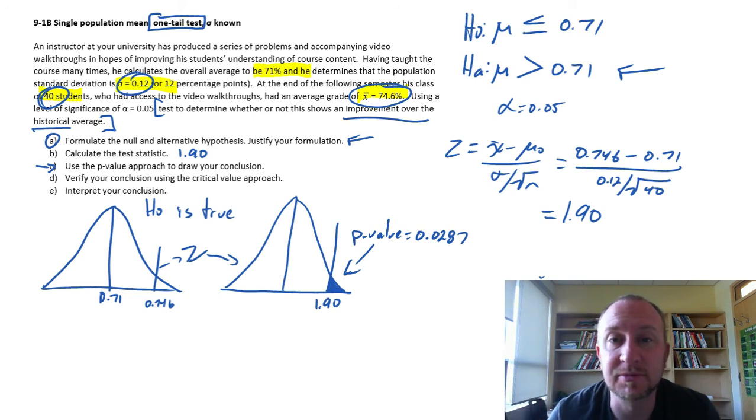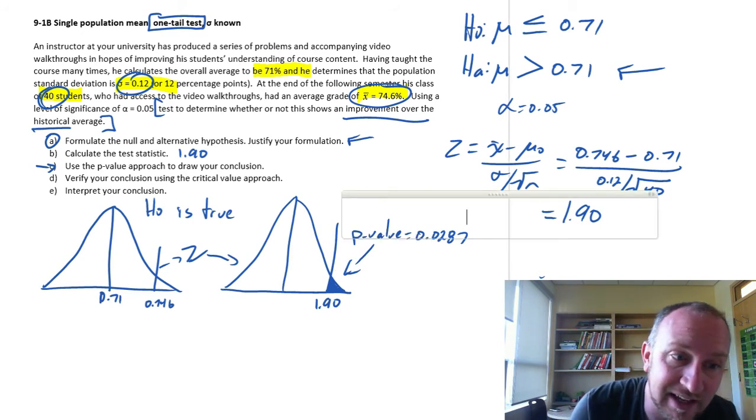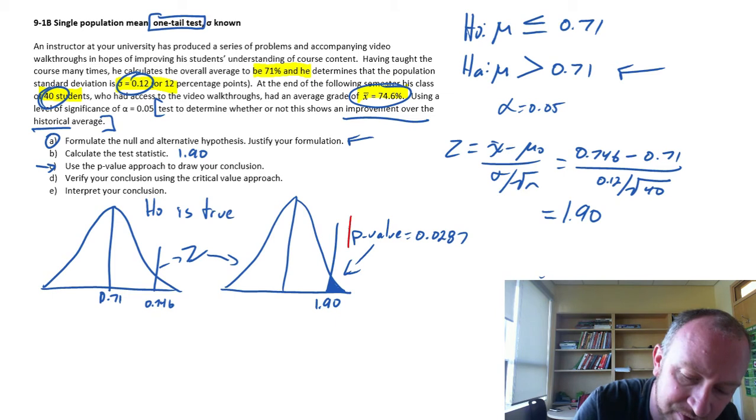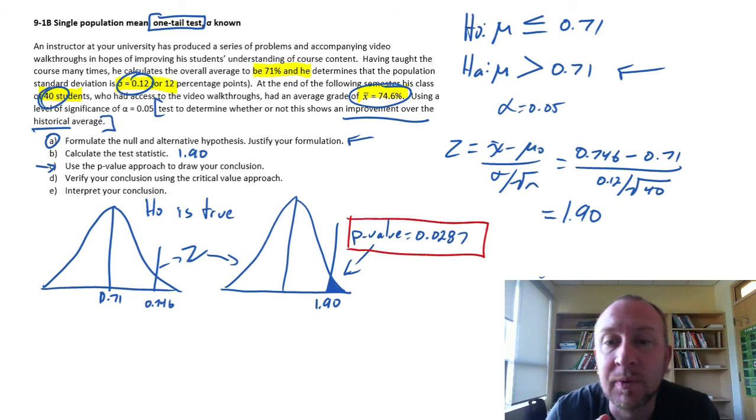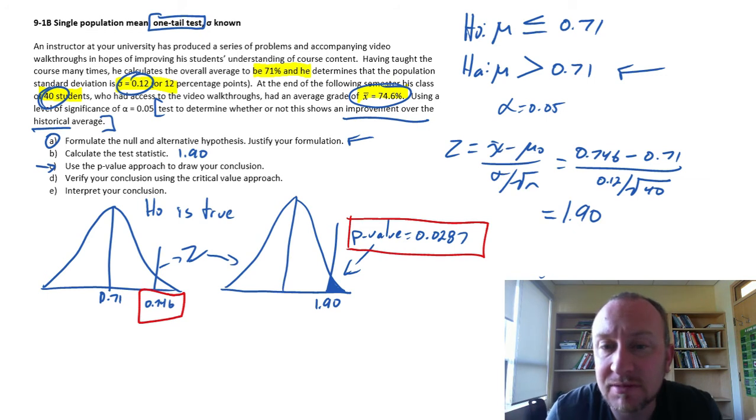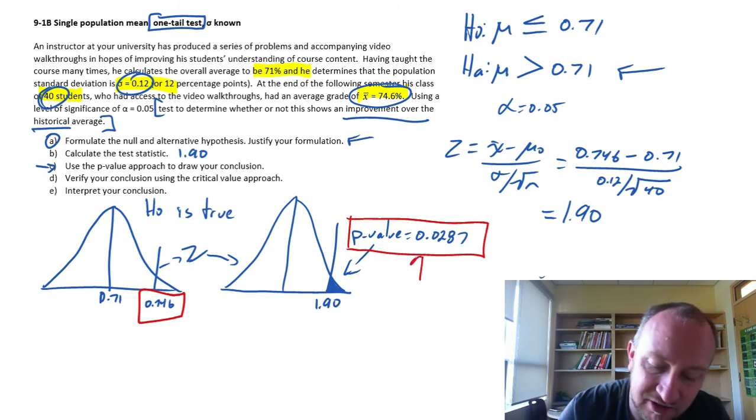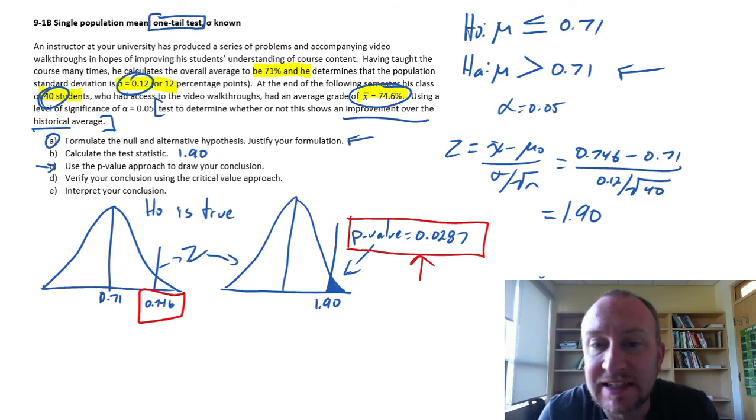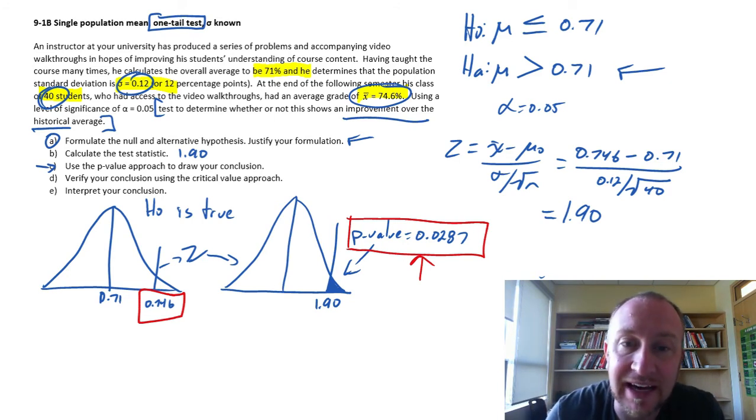Keep in mind that when we're performing these tests, we are always under the assumption that the null hypothesis is true, unless we have evidence to show otherwise. Well now, here's that evidence that shows otherwise. What this means is that, if the null is true, the possibility of obtaining a sample with a mean of 0.746 is possible. The probability is not equal to zero, it's possible. But it's extremely unlikely. So unlikely, in fact, that I'm going to reject my null hypothesis.